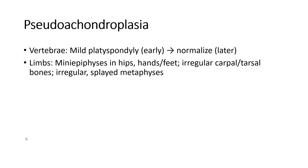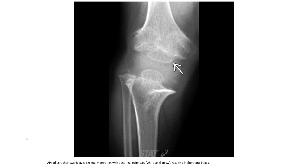Another case of achondroplasia shows vertebra with platyspondyly, appearing abnormal in early and normalized in lateral view. There are mini epiphysis at the hip. This is an example of spondyloepiphyseal dysplasia where AP radiographs show delayed skeletal maturation with abnormal epiphysis resulting in short long bones.